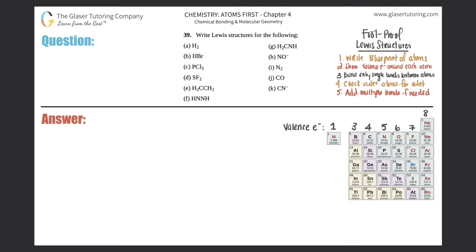Number 39: write Lewis structures for the following, a through k. Lewis structures are always written for covalent compounds - these are compounds where all non-metals or two or more non-metals come together, directing and sharing electrons. All of these compounds a through k are non-metals.